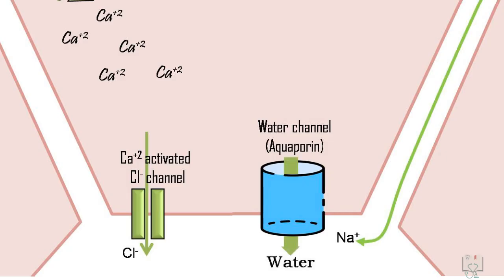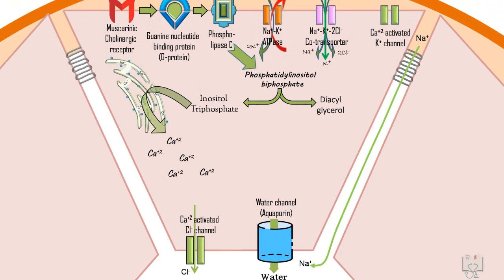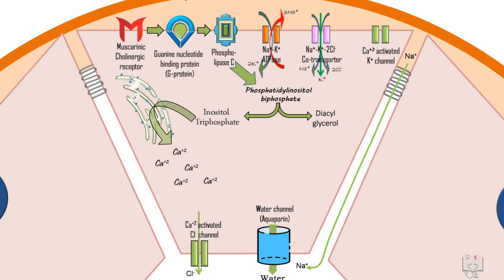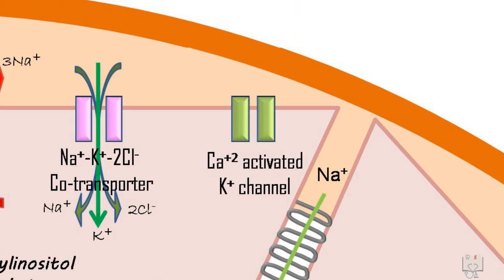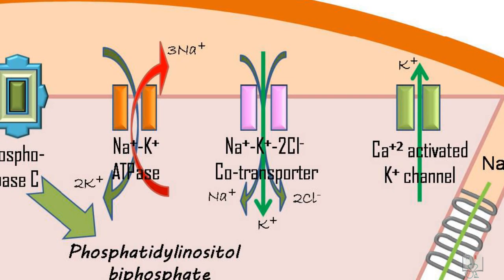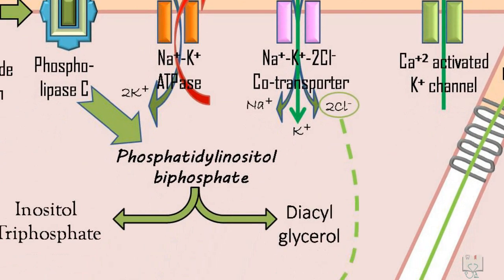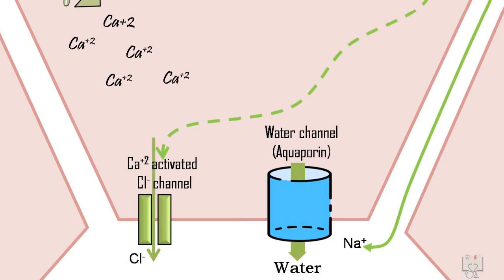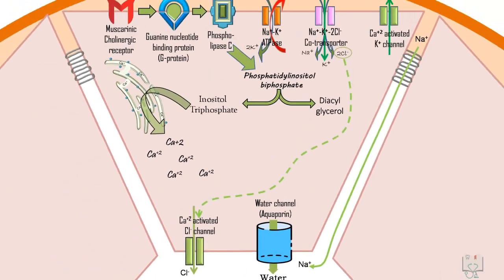To maintain the electrochemical gradient inside the cell, potassium ions move out through the now open potassium channels. The sodium-potassium-2-chloride co-transporter maintains the continuous inflow of chloride during the active secretion stage.